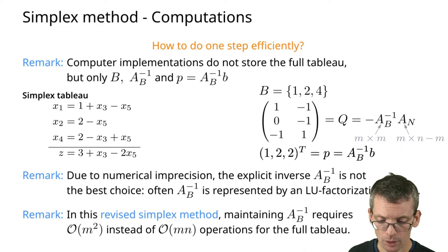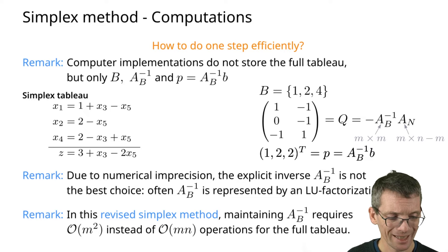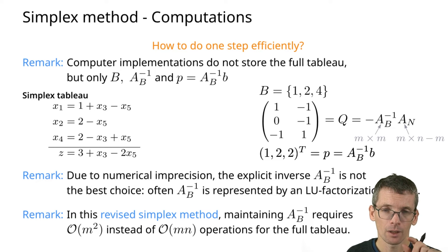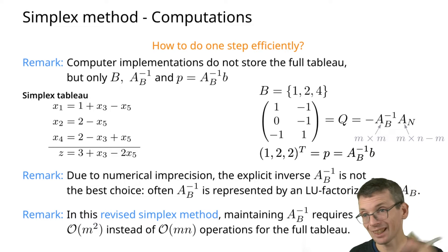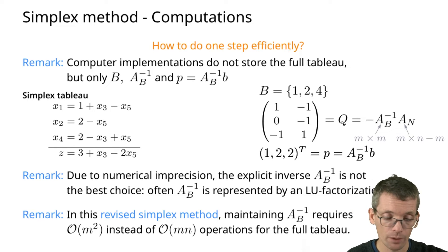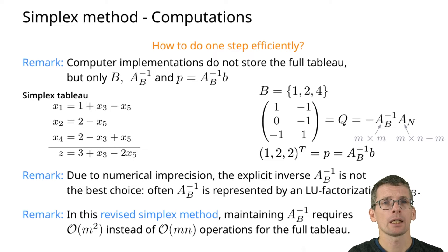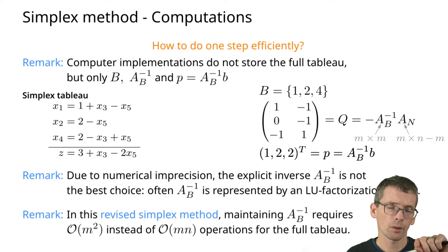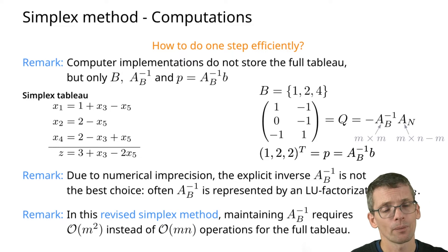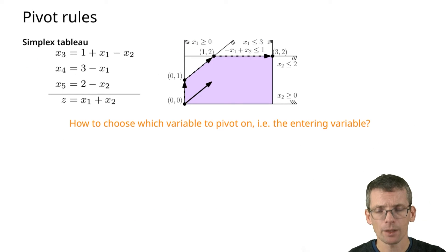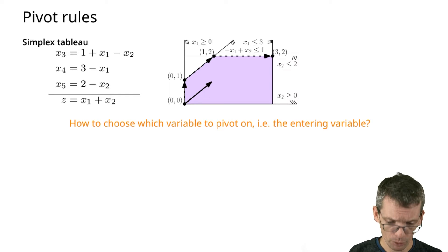A short remark: this doesn't mean that one step takes O(m²) time, because we still need to find the non-basic variable to swap in. Depending on how we do that — if we check all of them — we would again get O(m·n). So let's take one step as a unit and then ask how many such steps we do. For that, let's first take a look at pivot rules.